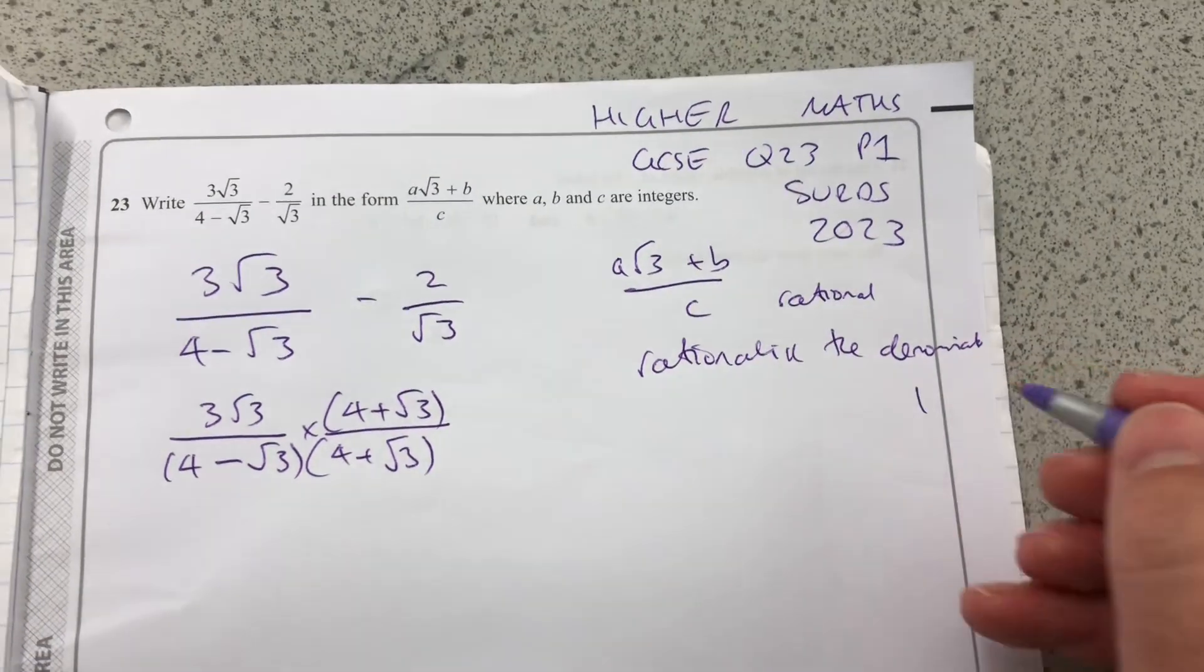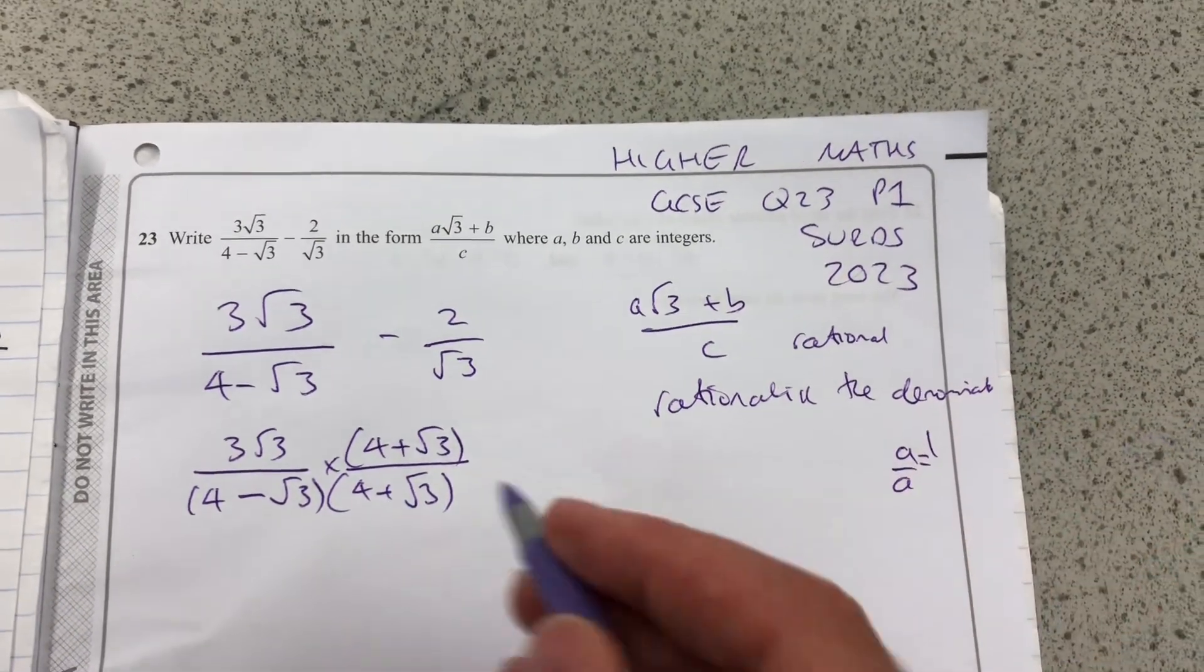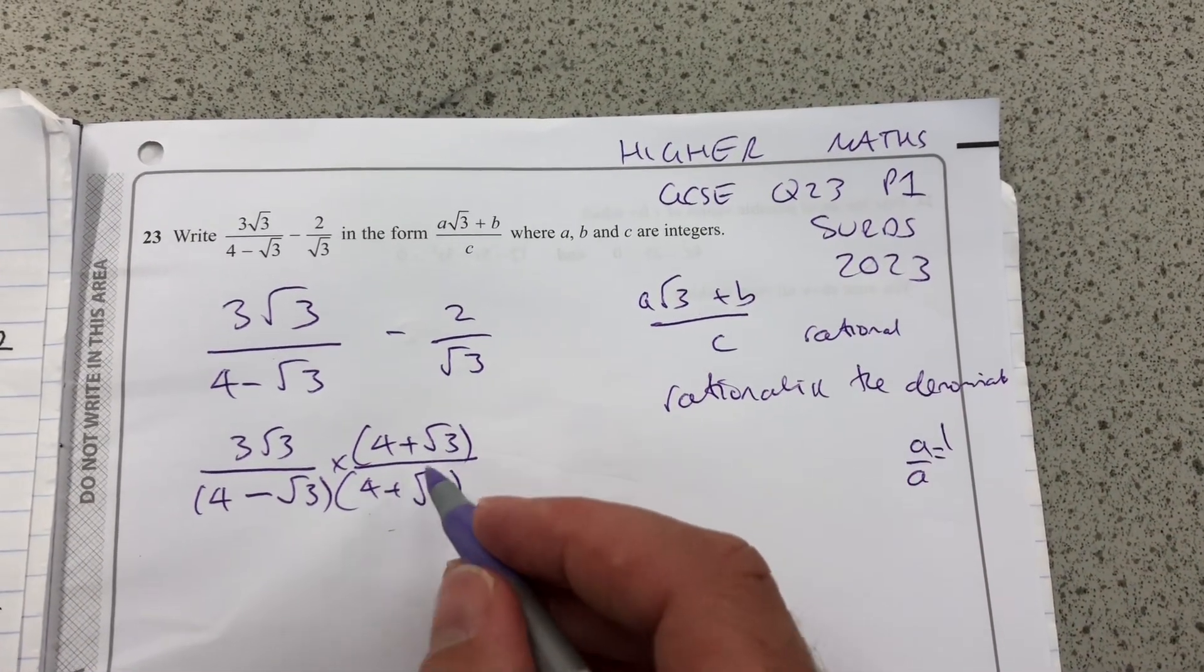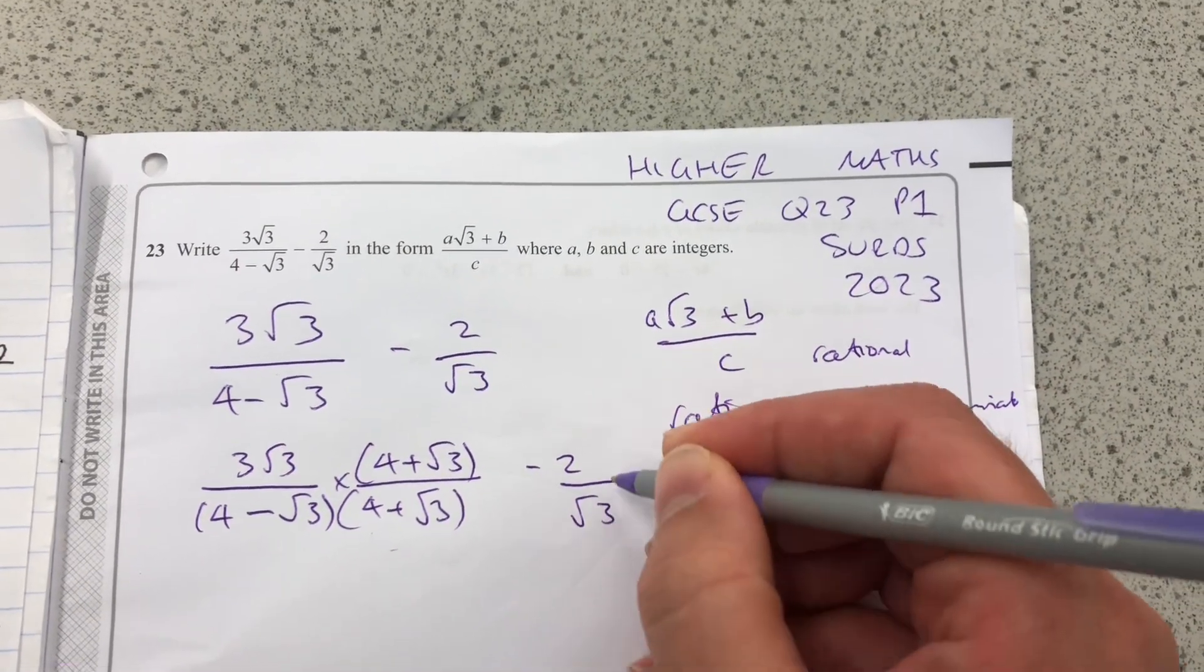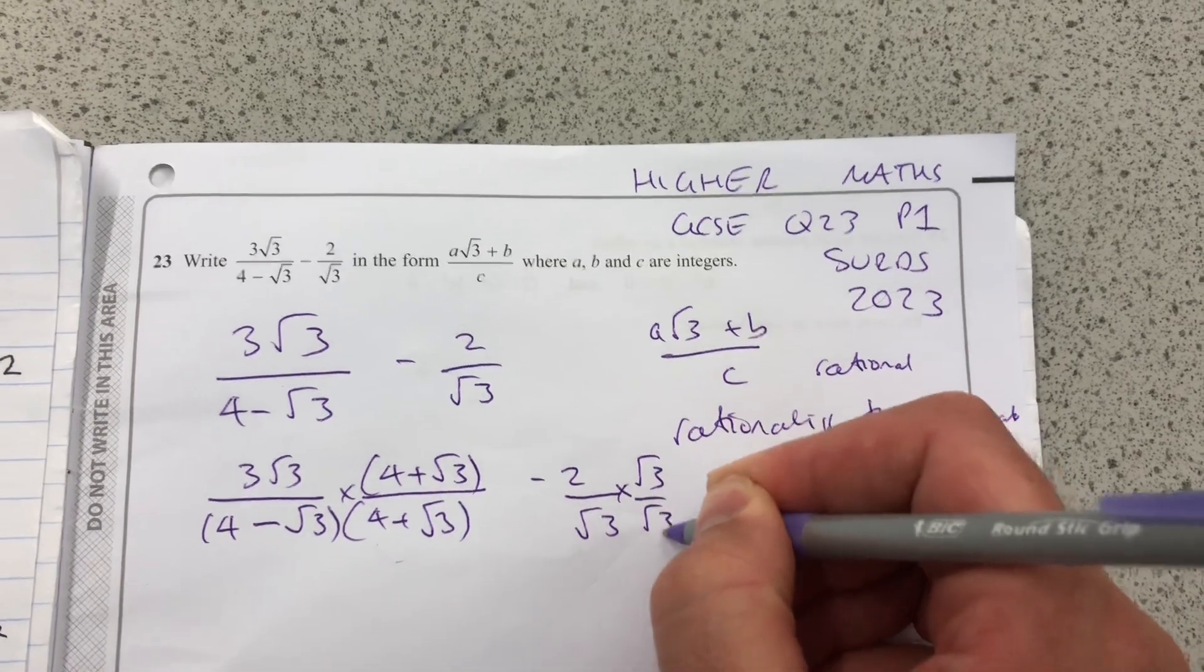Anything over itself is 1. A over A is 1. So I'm not changing anything. If I'm multiplying it by 1, do the same thing here. I'm going to multiply that by root 3 over root 3.